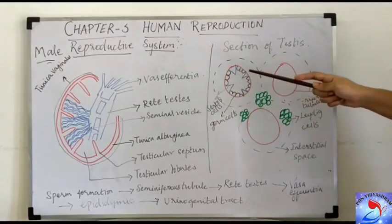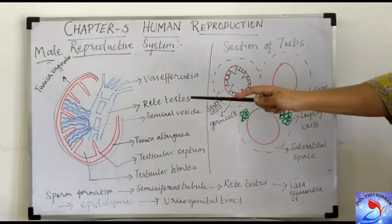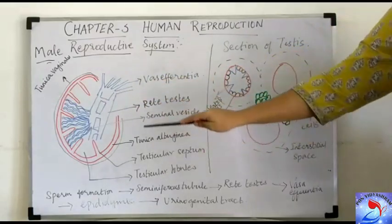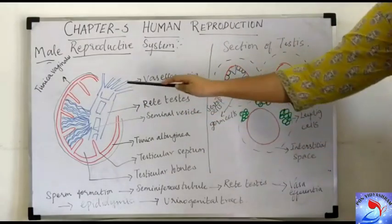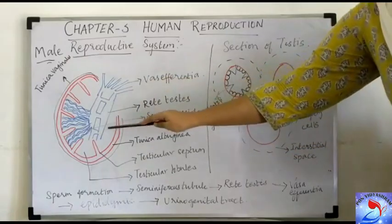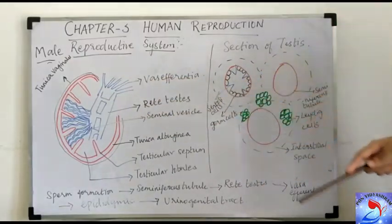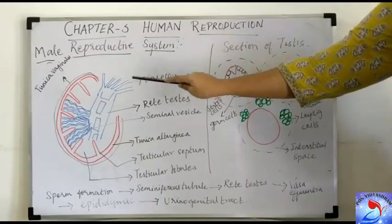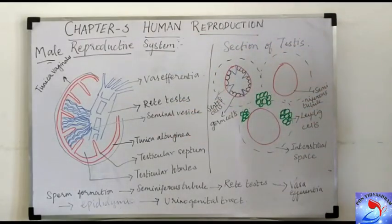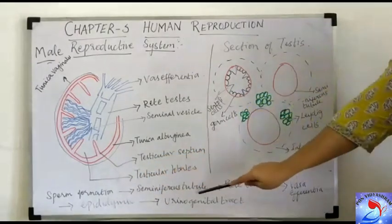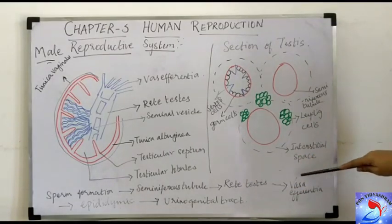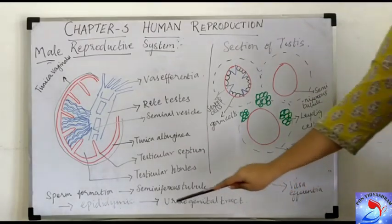The seminiferous tubule is a coiled structure that becomes linear towards the end and opens into a structure called the rete testis. The rete testis is formed by numerous seminiferous tubules which get connected and form a network. This rete testis opens out into a small tubular structure called the vasa efferentia. The sperm is formed in the seminiferous tubules, conducted by the rete testis, which opens into the vasa efferentia.